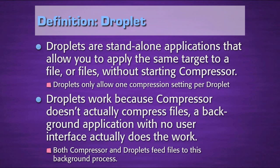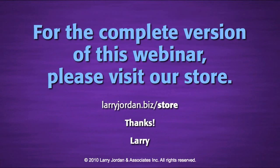Droplets are focused on achieving a single task, while batches can achieve multiple tasks at the same time. The cool thing about droplets is they work because Compressor doesn't actually compress files — a background application with no user interface actually does the work. Both Compressor and droplets are considered front ends: they set up a file for compression, but they don't actually compress the file. That's done by a background process. So as soon as you submit a file for compression using Compressor, you can quit Compressor; and as soon as you submit a file using a droplet, you can quit the droplet. Neither the droplet nor Compressor are necessary to compress a file — that is done in the background.